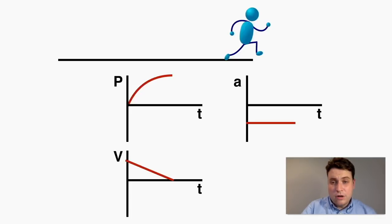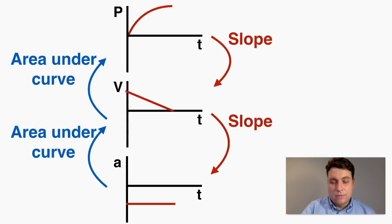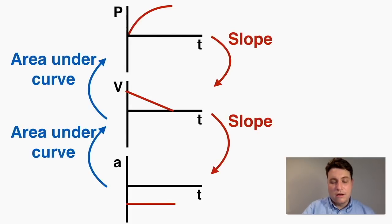I'm going to start by having you copy down this pattern of how to convert from position to velocity to acceleration graphs, or vice versa. If we're going down this list, you're going to use the slope of the graph to determine what the next graph looks like. And if you're going up the list, you're going to use the area under the curve of the graph to determine what the next graph looks like. I'll talk about that in more detail — for now, just copy down these rules.